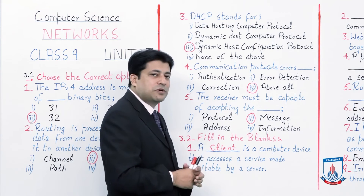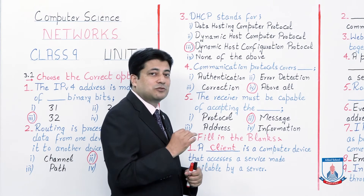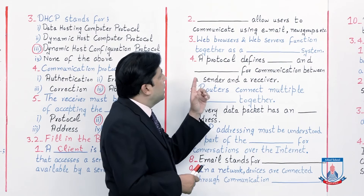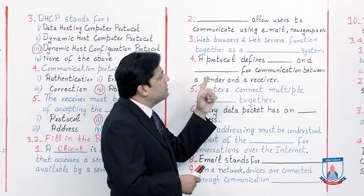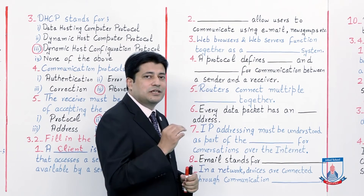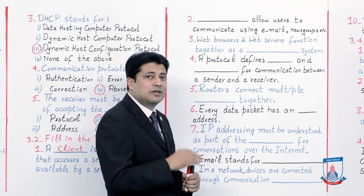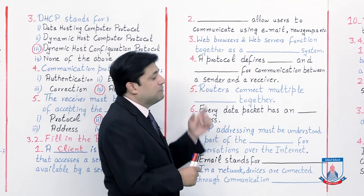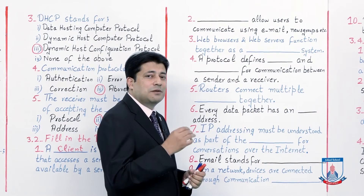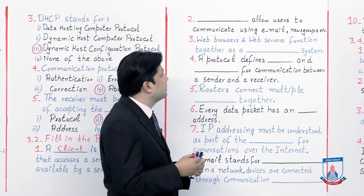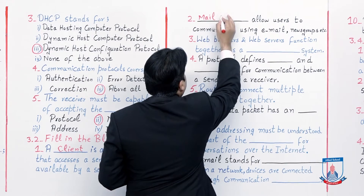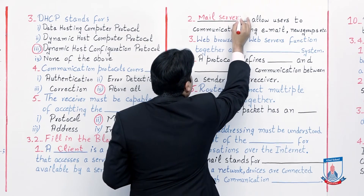Number 2: Dash allow users to communicate using email, news group, etc. From our lectures, the thing that allows users to communicate using email or newsgroups is a mail server. So write 'mail server' here.